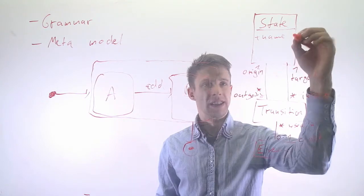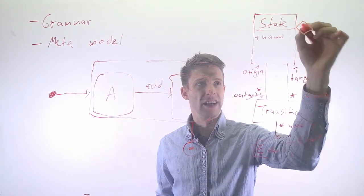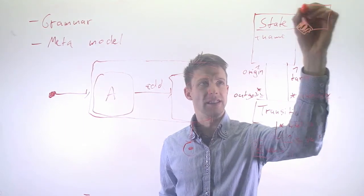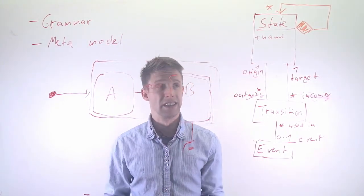Now my pen is starting to lose it, but we could, for example, support this by having a composition in UML, so we could say a state can own a number of other states.